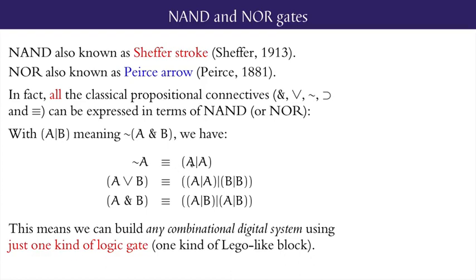For example, NOT A is equivalent to A NAND A, A OR B is equivalent to (A NAND A) NAND (B NAND B), and A AND B is equivalent to (A NAND B) NAND (A NAND B). As a consequence, any combinational digital system can be built using only NAND gates or, alternatively, using only NOR gates.